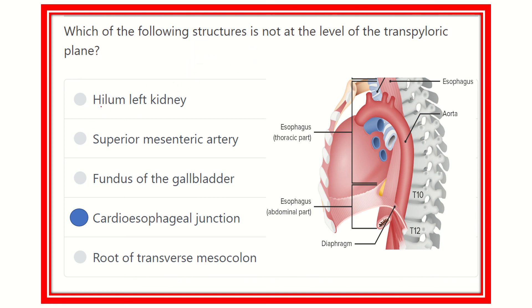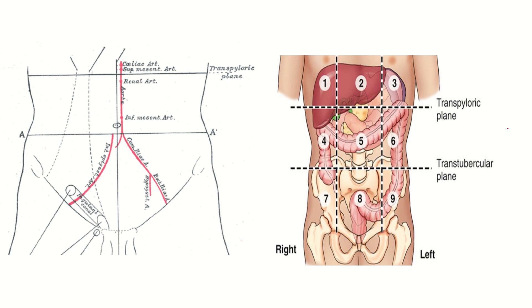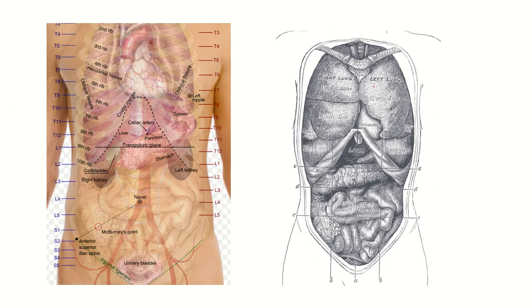Our final answer: the hilum of the kidney is located at the transpyloric plane; superior mesenteric artery is also at this level; fundus of the gallbladder and root of the transverse mesocolon are also at the transpyloric plane. However, the cardioesophageal junction — where the esophagus ends into the stomach — the transpyloric plane lies well below the cardioesophageal junction.